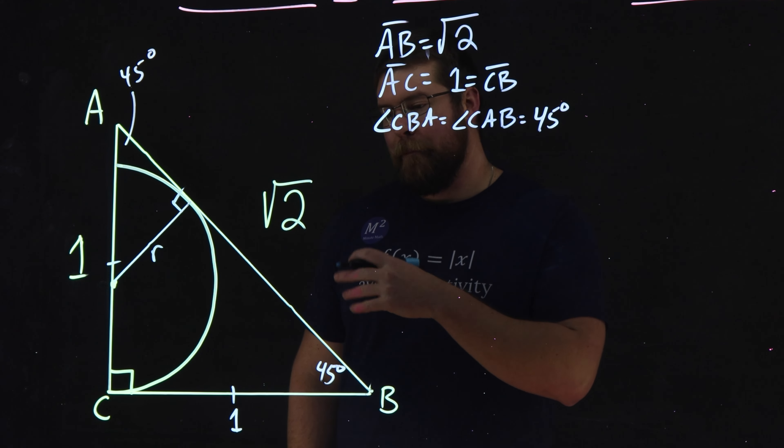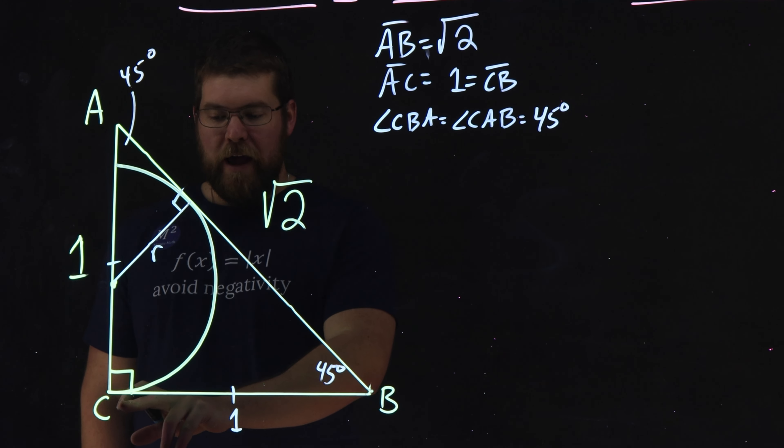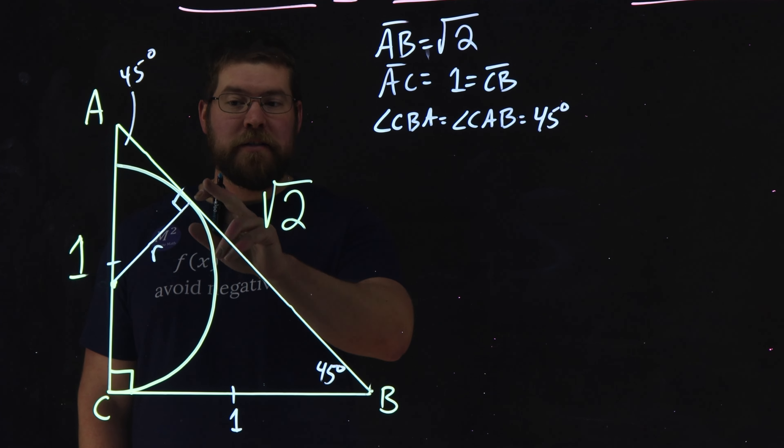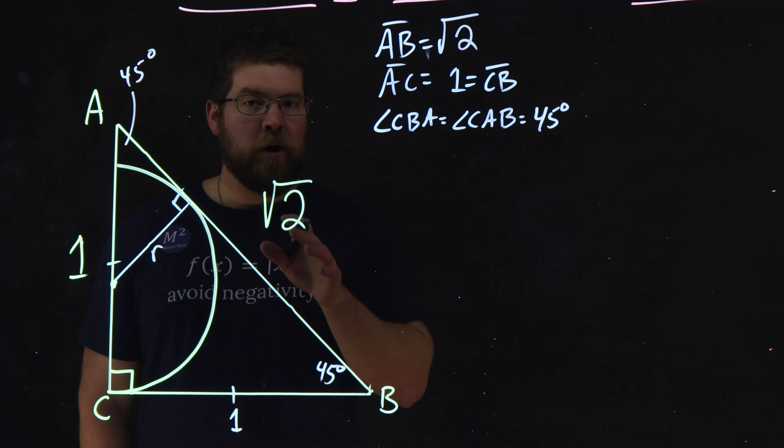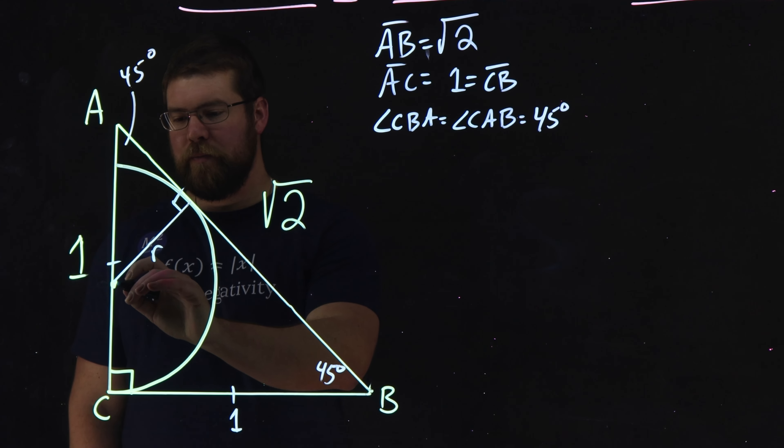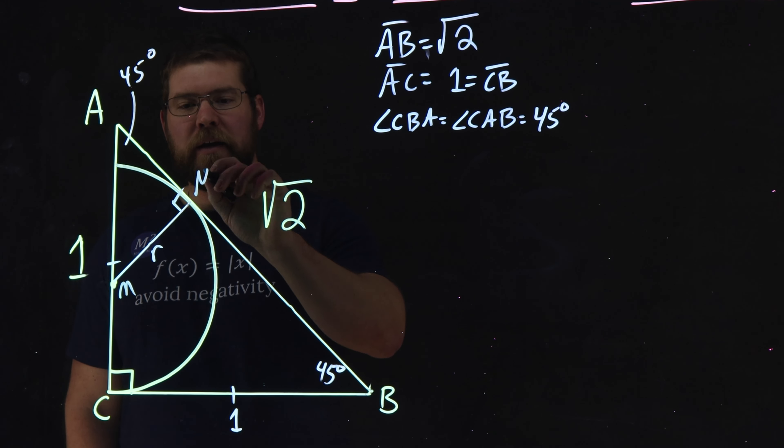The two tangents theorem basically tells us that two lines that come from the same point that are tangent to the circle are congruent. So let's call this center of the circle M, and this is N right here.